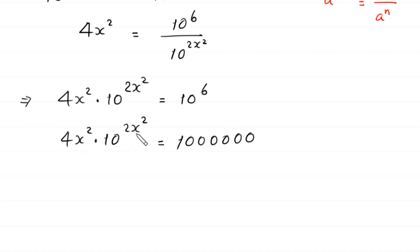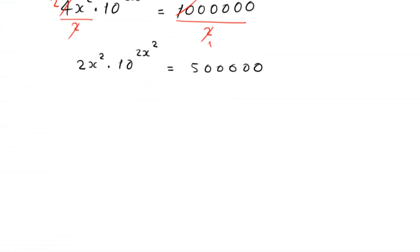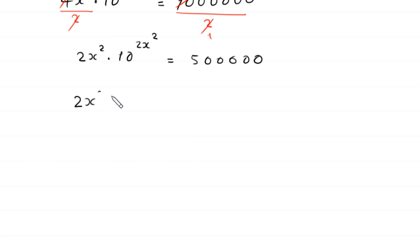Since we have 4x squared on the left and 2x squared in the exponent, we divide both sides by 2 to make the base match the exponent term. This gives 2x squared times 10 to the power 2x squared equals 500,000. And 500,000 can be written as 5 times 10 to the power 5.